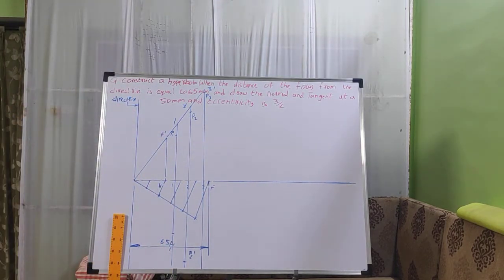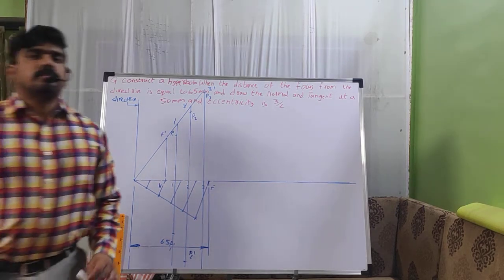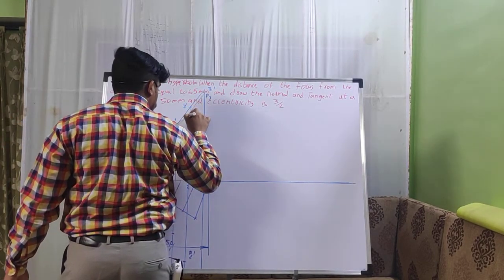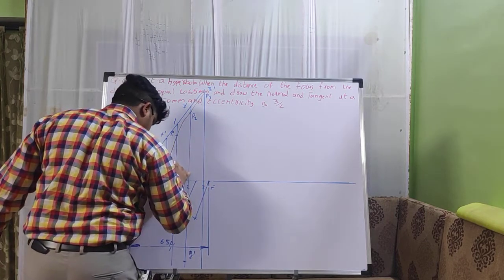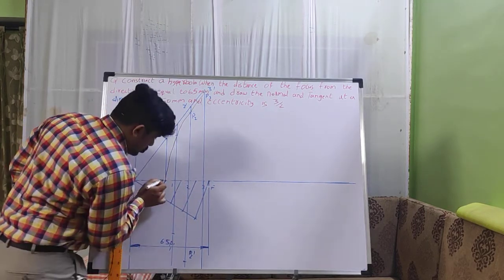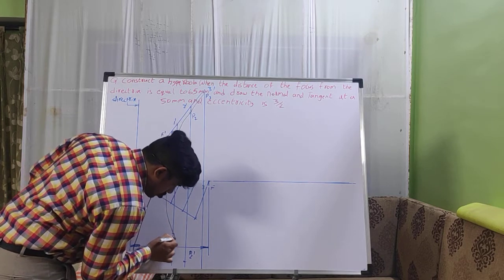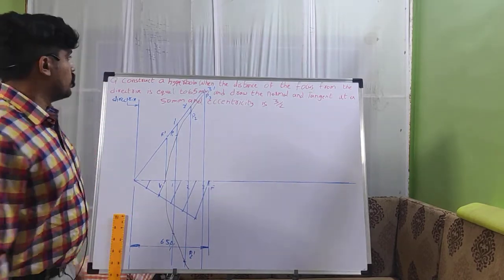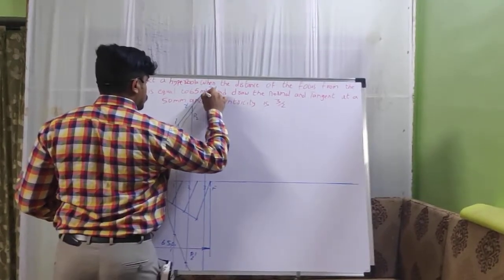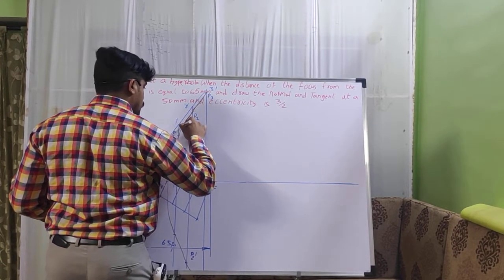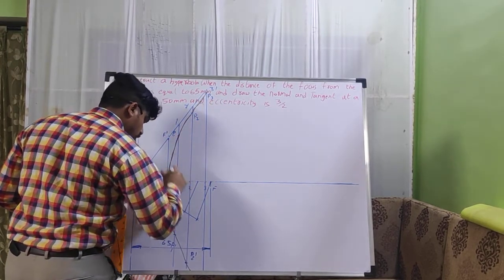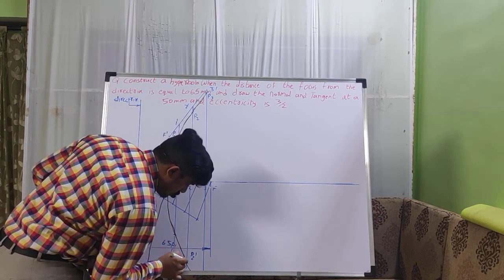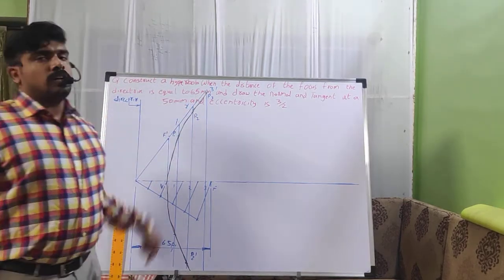Now join all the points P1, P2, P3 and P1', P2', P3' with the H grade pencil — using a black sketch here for visibility. This gives us the structure of the hyperbola. So we have got the hyperbola drawn.